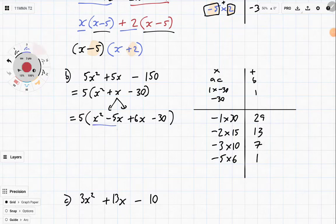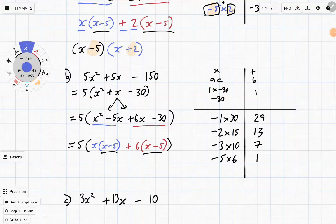Now we do the proper decomposition stage. We get x bracket x minus 5 plus 6 bracket x minus 5. And once again, we can see that we've got these x minus 5 common factors with this x plus 6 remainder. So we're going to get 5 brackets x minus 5 bracket x plus 6. And there we go, that is a completely decomposed and factorized quadratic.